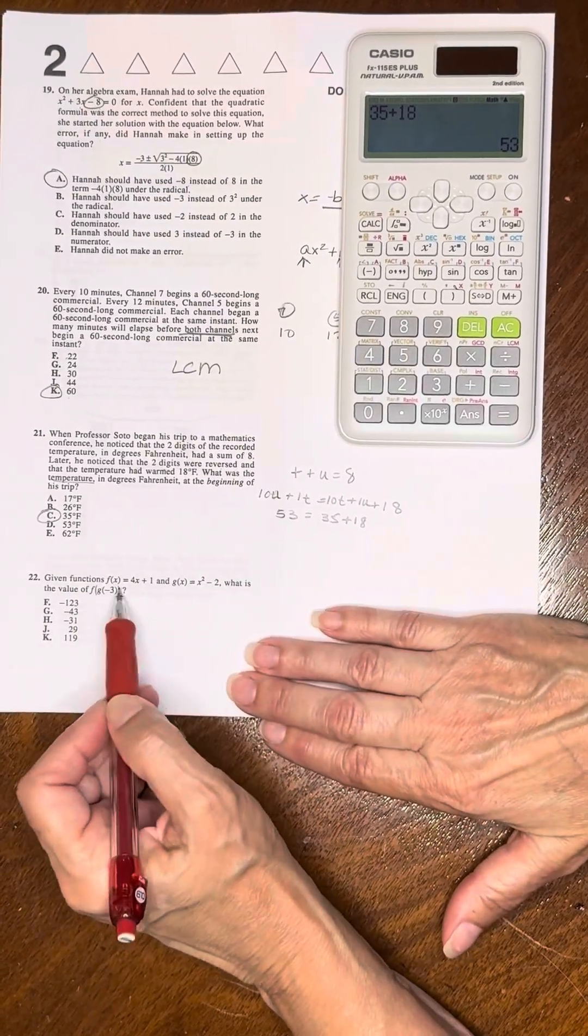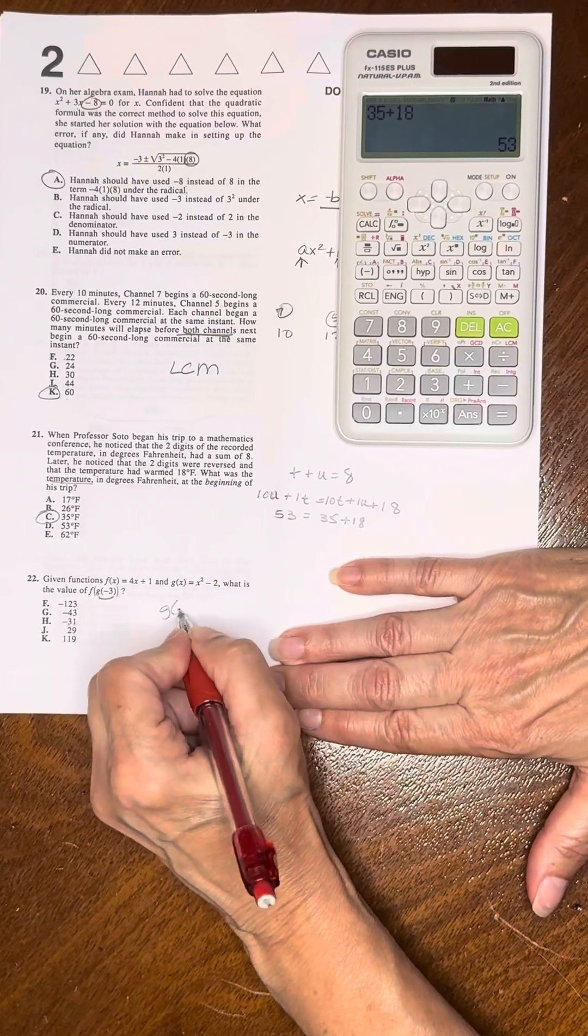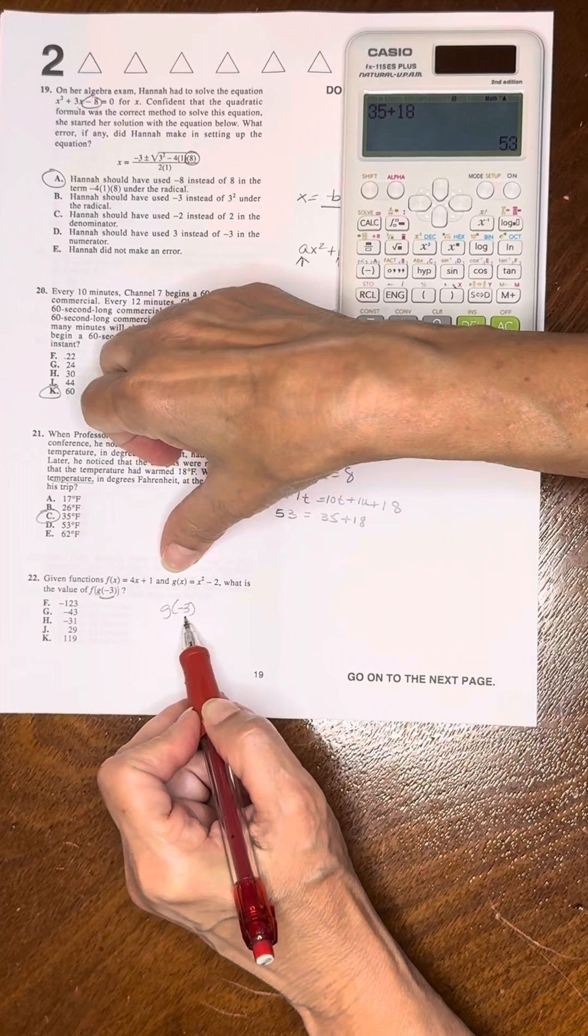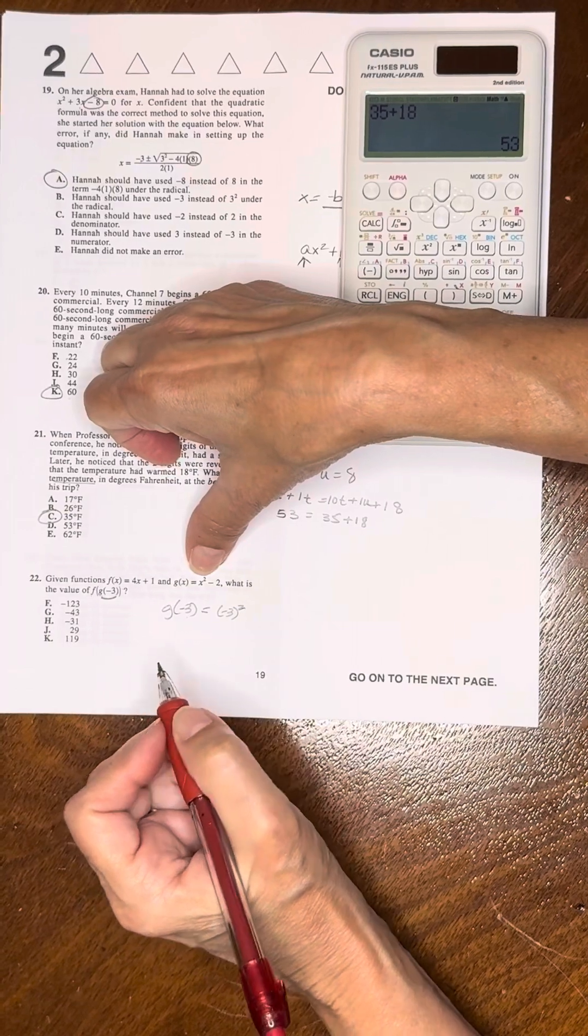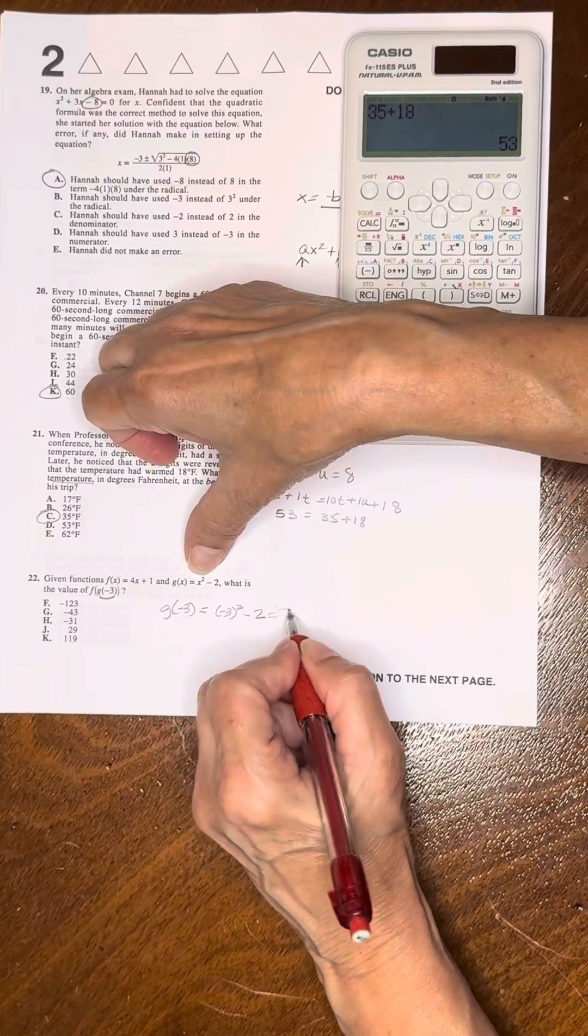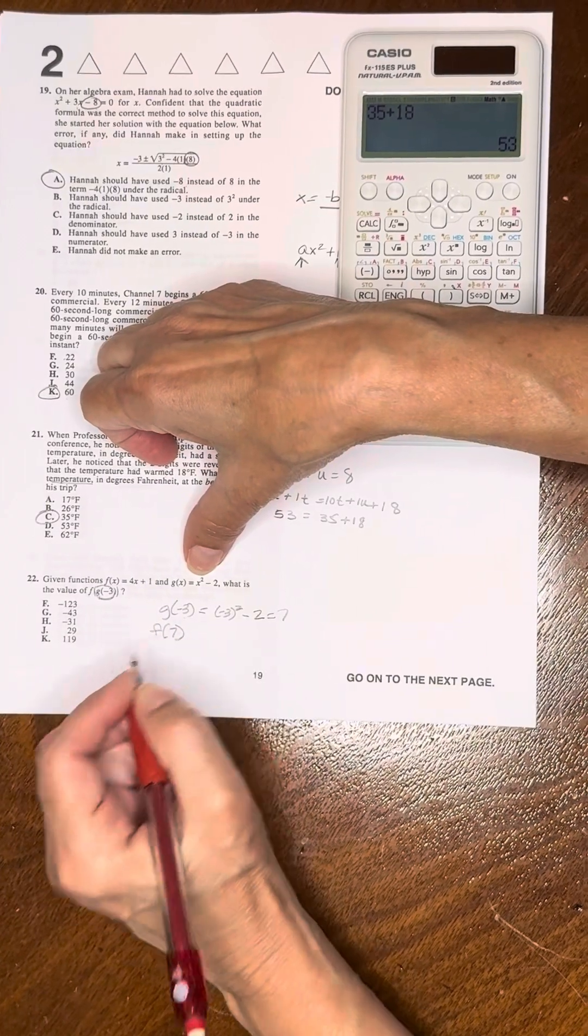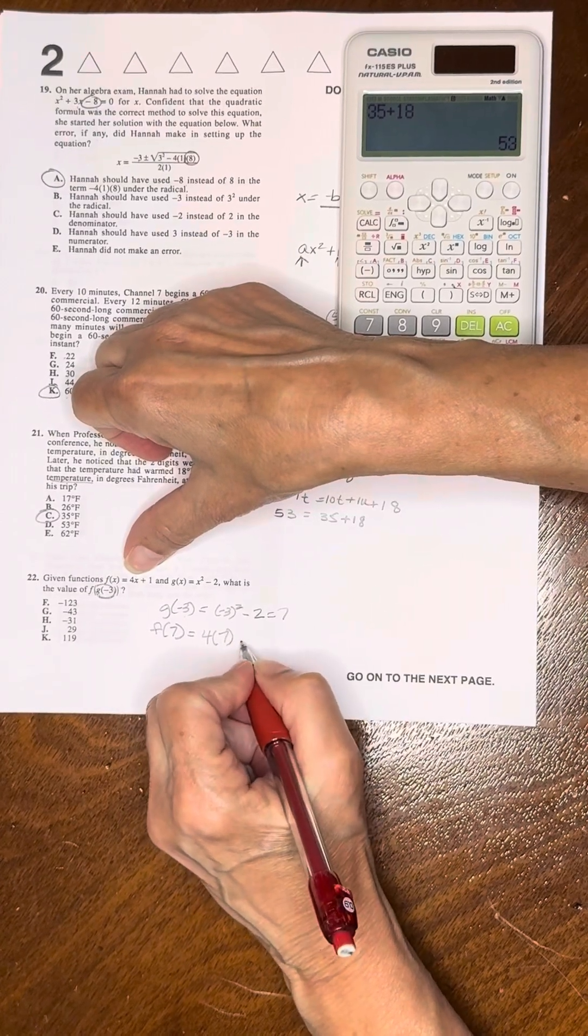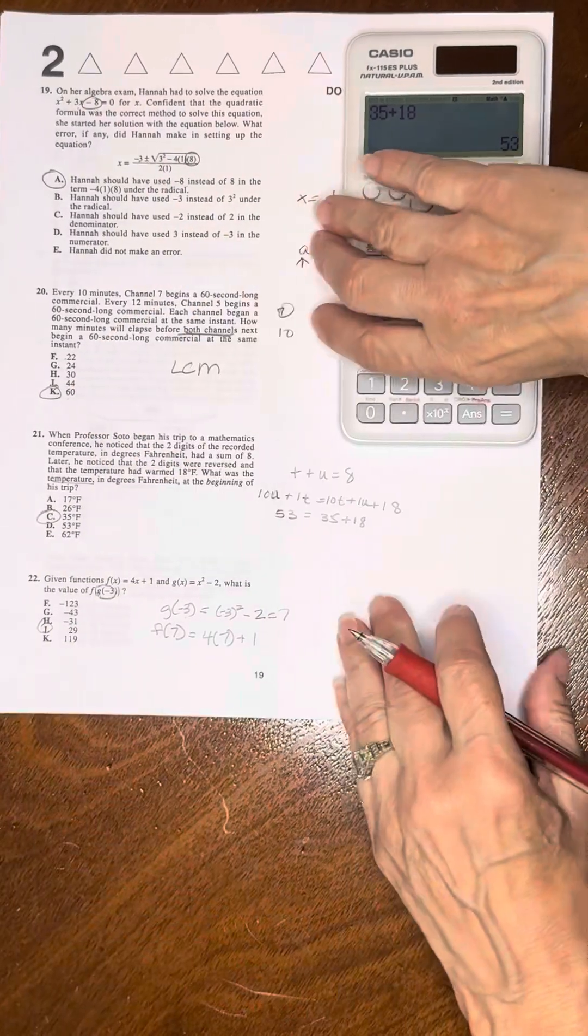Given these two functions, what is the value of F of G of X? First you work G of negative three. This says where you see an X in the G function, substitute a negative three. When we square it, we're squaring the negative three. So it's negative three times negative three and the result is positive. That's nine minus two, which is seven. Now we plug seven where G of negative three is. So it's F of seven. Now we're substituting seven where X is in the F function. So that's 28, 29. J is the solution.